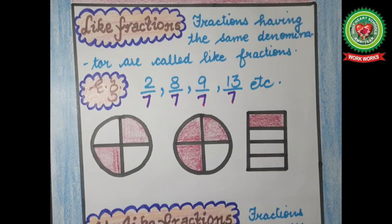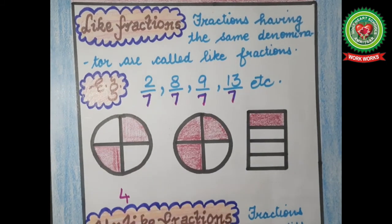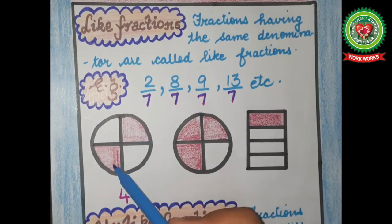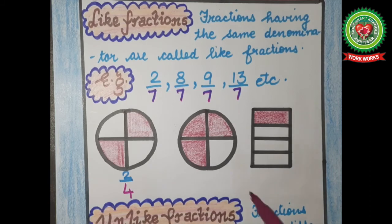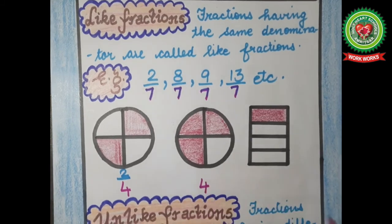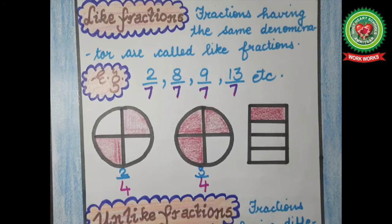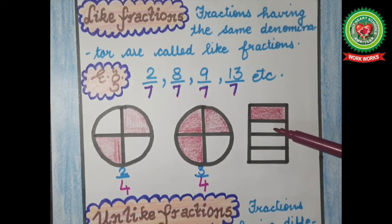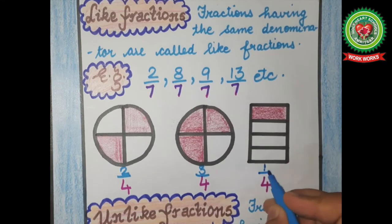Let us understand it with the help of figures. In the first figure, total parts are 4 and 2 parts are shaded — fraction is 2 upon 4. In the next figure, total parts are 4 and 3 parts are shaded — fraction is 3 upon 4. In the next figure, total parts are 4 and 1 part is shaded — fraction is 1 upon 4.